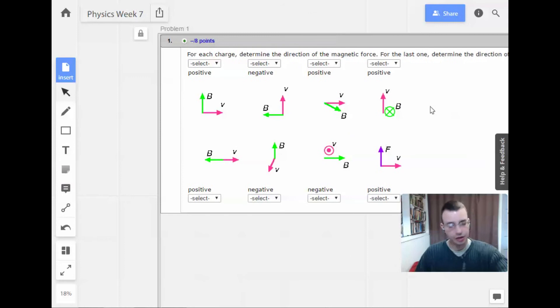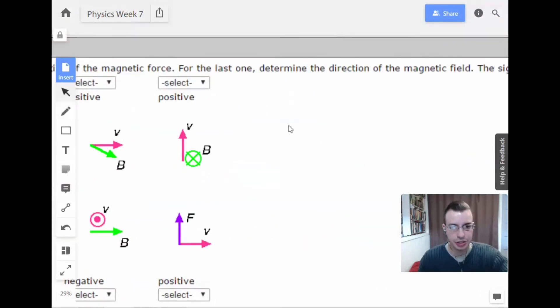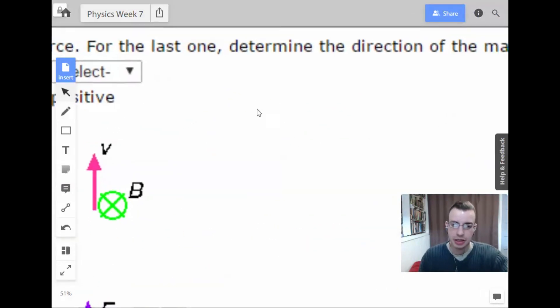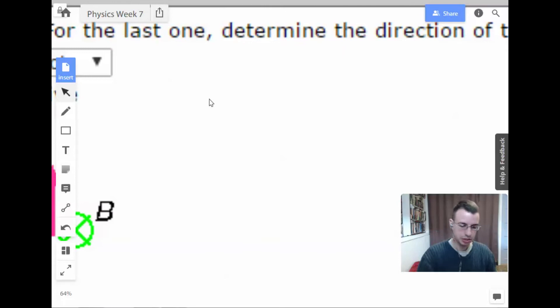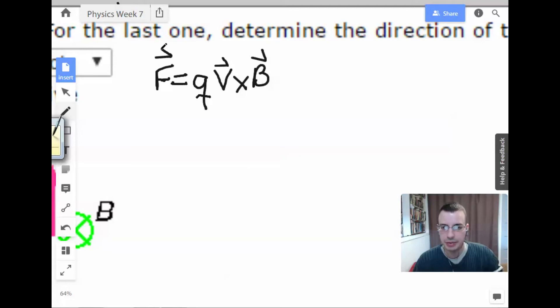So the equation we're going to use for this is Force equals Q V cross B. This will be a vector, this will be a vector, that'll be a vector. So the secret here is cross products.